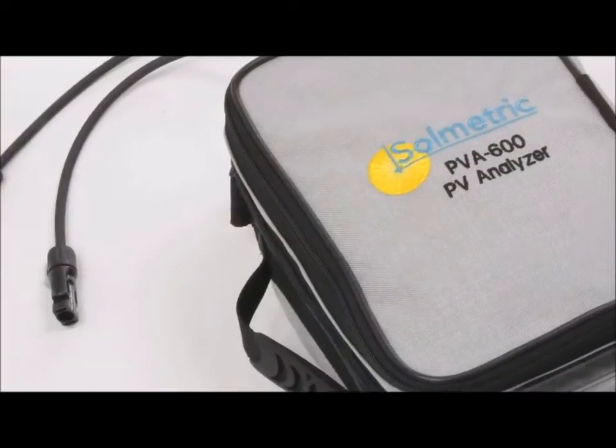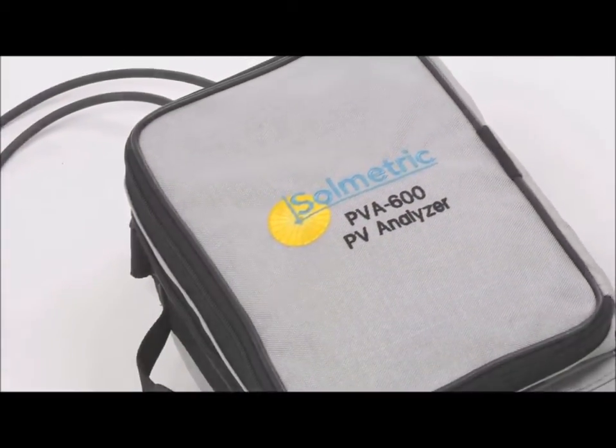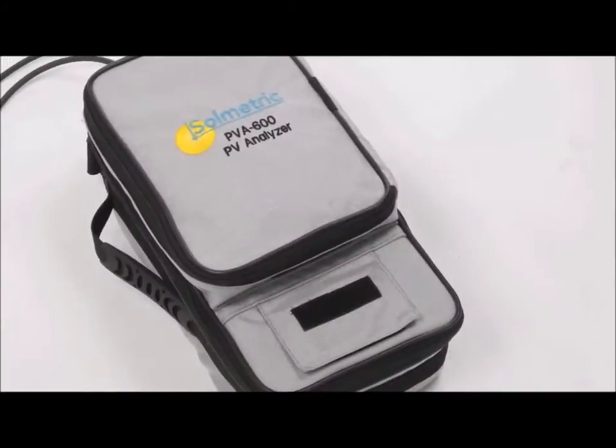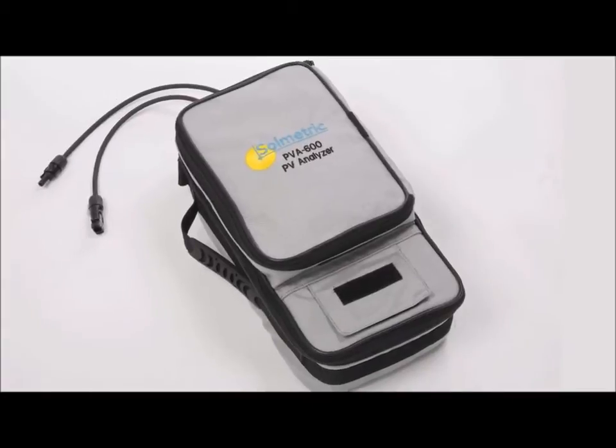The Solmetric PV Analyzer hardware is also well protected for operator safety. The exterior is electrically isolated and if it senses too much current or voltage during measurement, the PV Analyzer will disable automatically.